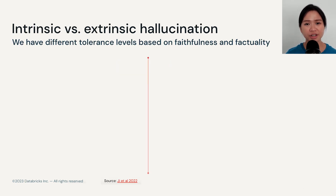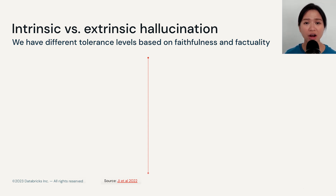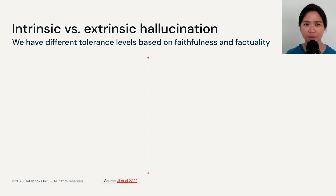There are two types of hallucination: intrinsic and extrinsic. Based on individuals, we may all have different tolerance levels based on how faithful or how factual we expect these outputs to be. We'll talk in just a second about what faithful actually means in this context.